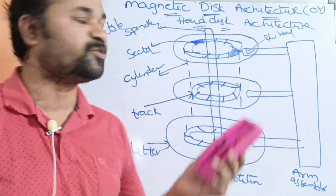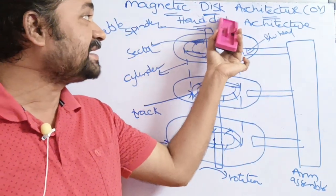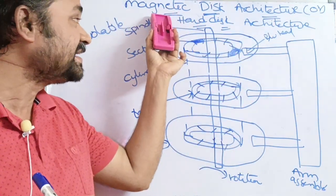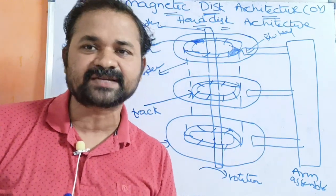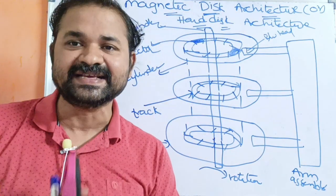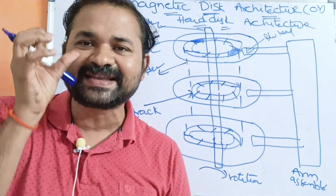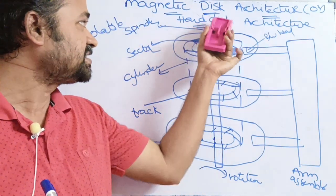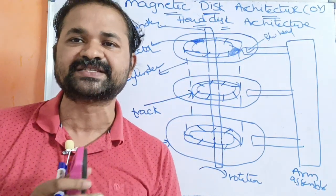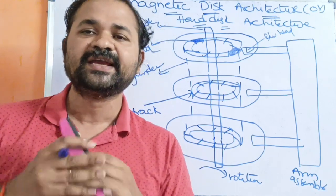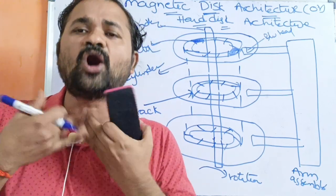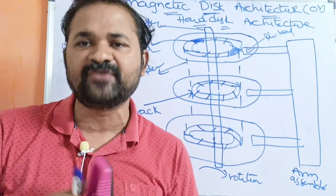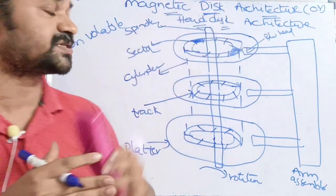In this video, we are going to discuss about magnetic disk architecture in operating systems. Magnetic disk can also be called as hard disk. It is named as magnetic disk because it is coated with magnetic material. The hard disk is mainly useful in order to store a large amount of data permanently. So if we want to store a bulky amount of data, then we have to use hard disk.